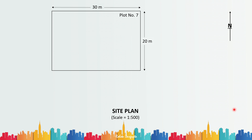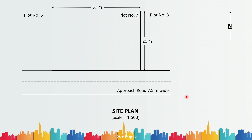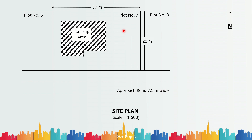Next you have to show the adjoining plots. It is okay if you don't show the adjoining plots in totality — just show their position and give their proper names, like plot number six and plot number eight. Next you have to show the approach road and the width of that road. Here it is written 'approach road 7.5 meter wide' and as you can see there is the center line of the street.